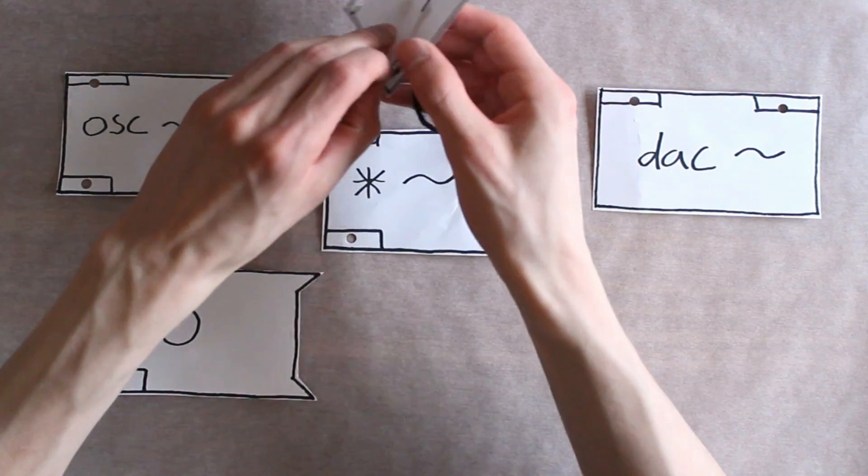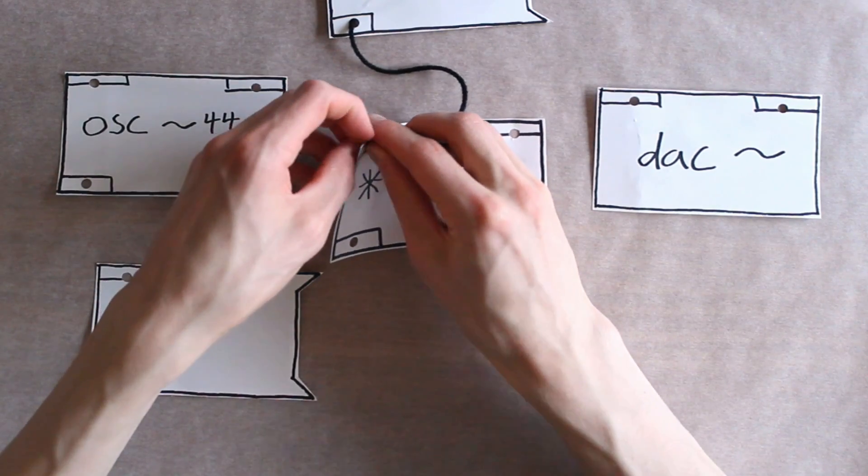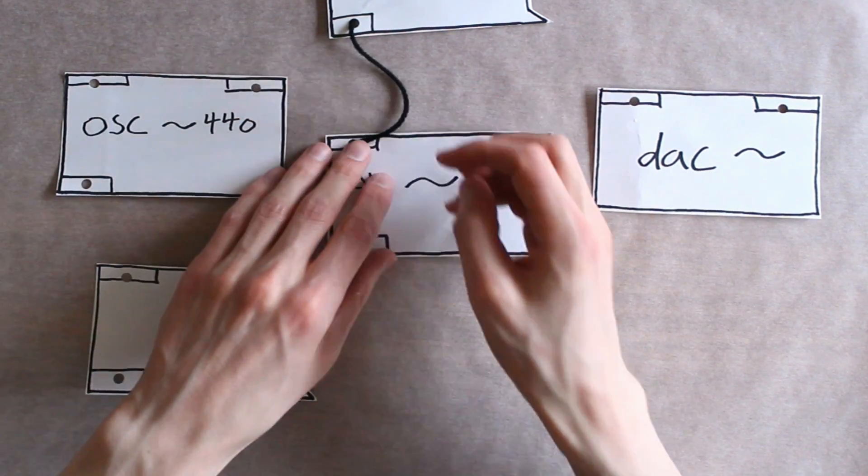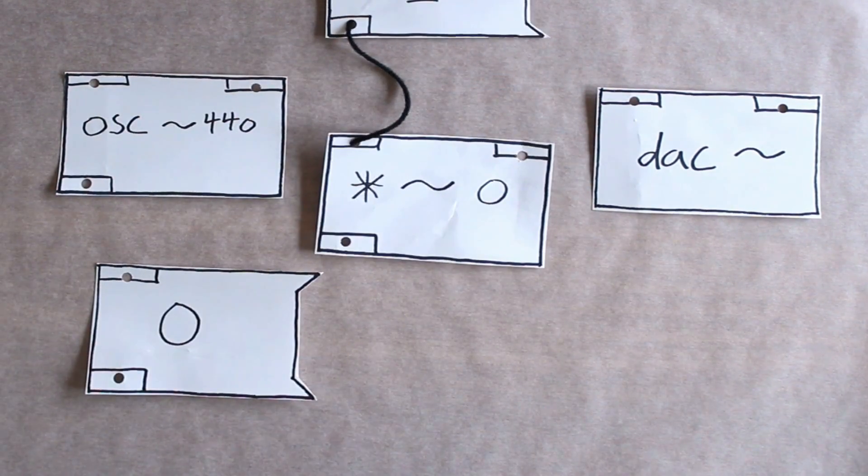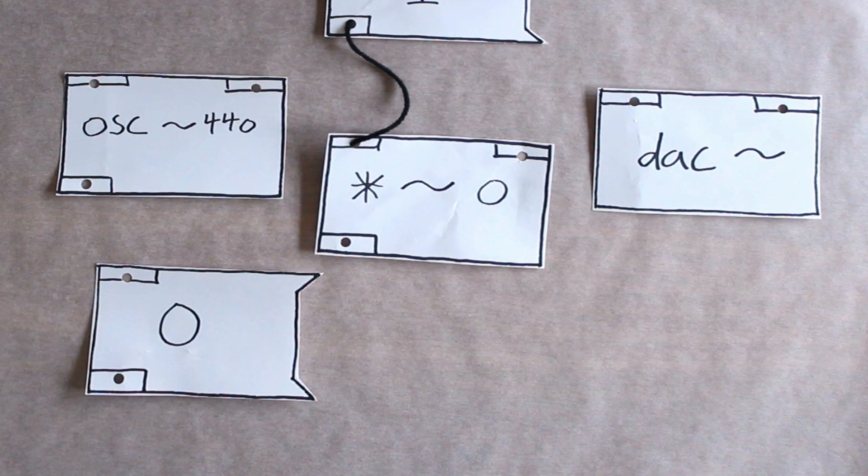You can connect objects by clicking on the outlet on one object and dragging to the inlet on another. Outlets are usually found in the bottom of an object. They are the part that spits out information.